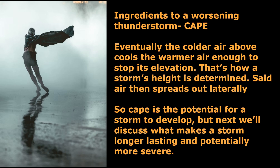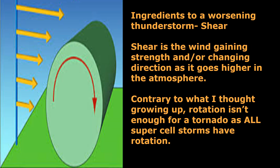Eventually, the colder air above cools the warmer air below enough to stop its elevation. That is how a storm's height is determined. Said air then spreads out laterally. So CAPE is a potential for a storm to develop, but next we'll discuss what makes the storm longer lasting and potentially more severe.